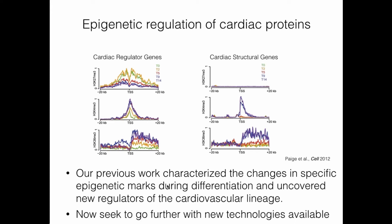Our interest in epigenetic regulation of this process got started about six years ago, where we looked at various epigenetic marks during the same differentiation pathway and noticed that different classes of cardiac genes were regulated differently. Regulator genes, in particular transcription factors, started out in bivalent states before becoming upregulated during differentiation, where more structural proteins were largely unmarked in embryonic stem cells before becoming activated at later stages.